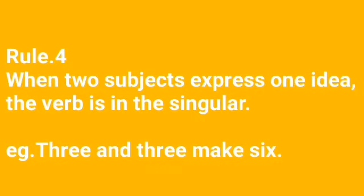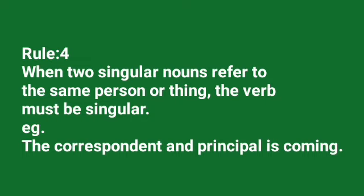Rule 4: When two singular nouns refer to the same person or thing, the verb must be singular. Example: 'The correspondent and principal is coming.' Here, the correspondent and principal is the same person.